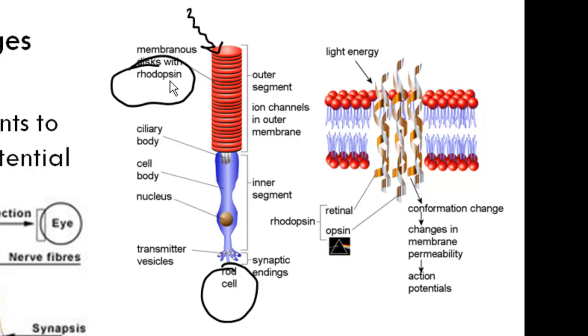It excites it, so it changes its conformation slightly. And that conformation change then has a series of events, the domino effect of events, that causes the permeability of this membrane to change.